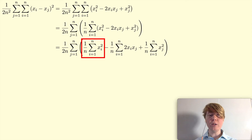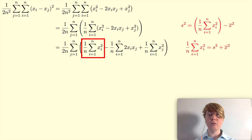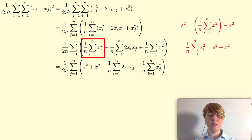Let's look at this very first one: you've got 1 over n times the sum of xi squared. You may recall that the sample variance is equal to this minus the sample mean squared. So we can rearrange this, and replace this sum multiplied by 1 over n by the sample variance s² plus the mean squared. So we've dealt with that very first sum.